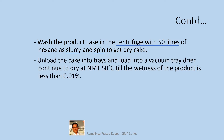Unload the cake into trays and load into a vacuum tray dryer. Continue to dry at not more than 50 degrees Celsius till the wetness of the product is less than 0.01%. The trays should be preferably PP or PTFE for the same reason as described above. The product is dried at low temperature under vacuum as there is a potential risk of the product melting at high temperature.